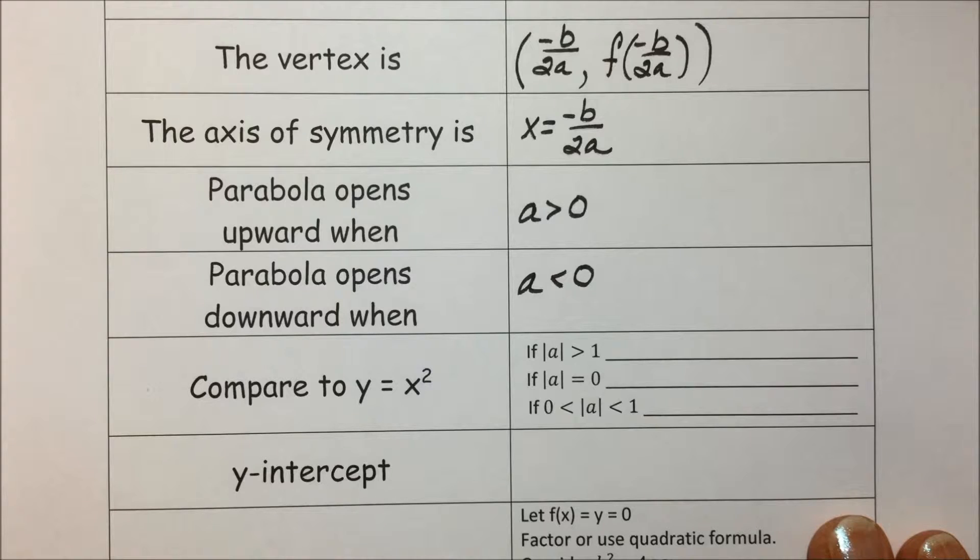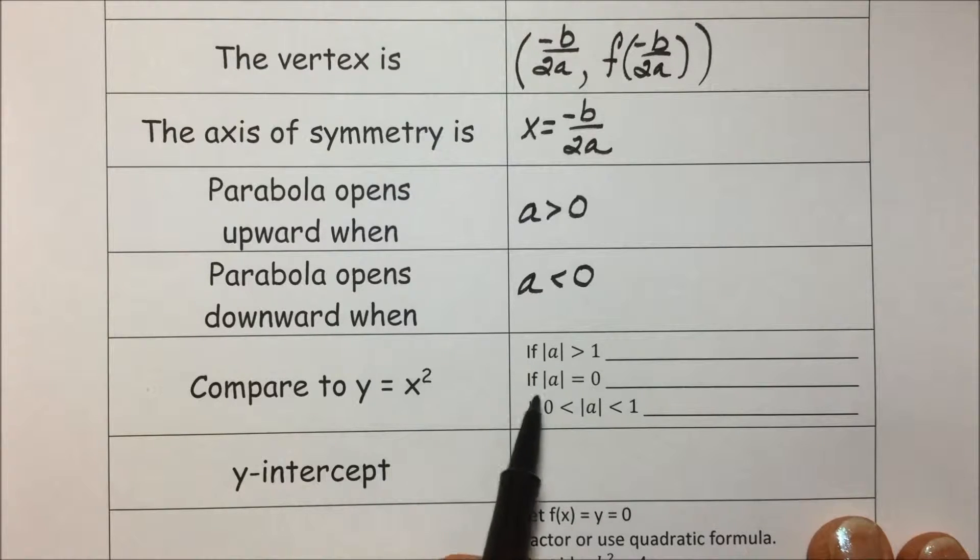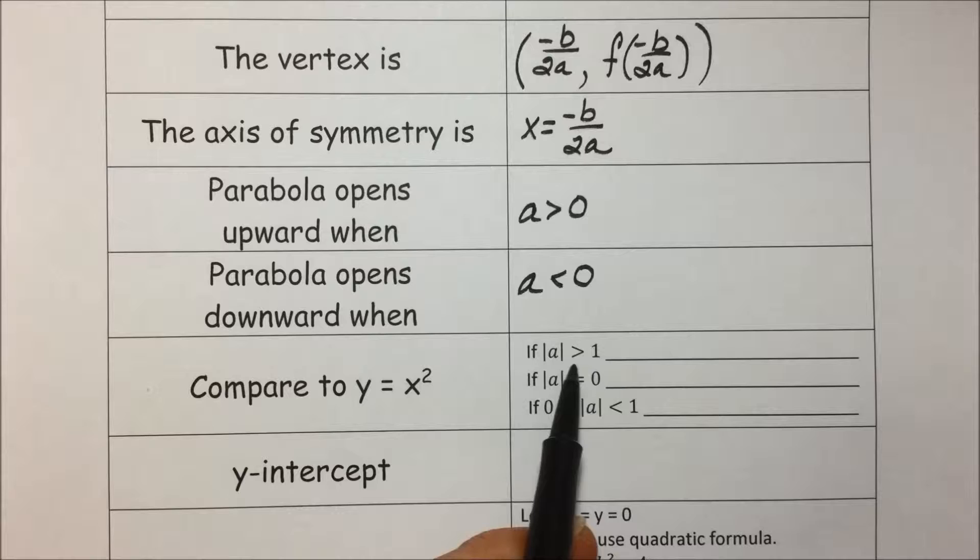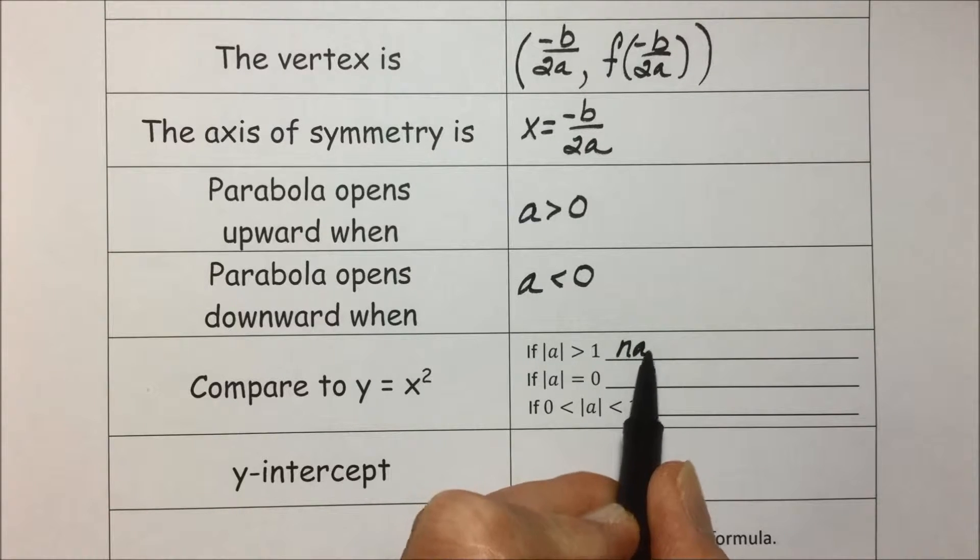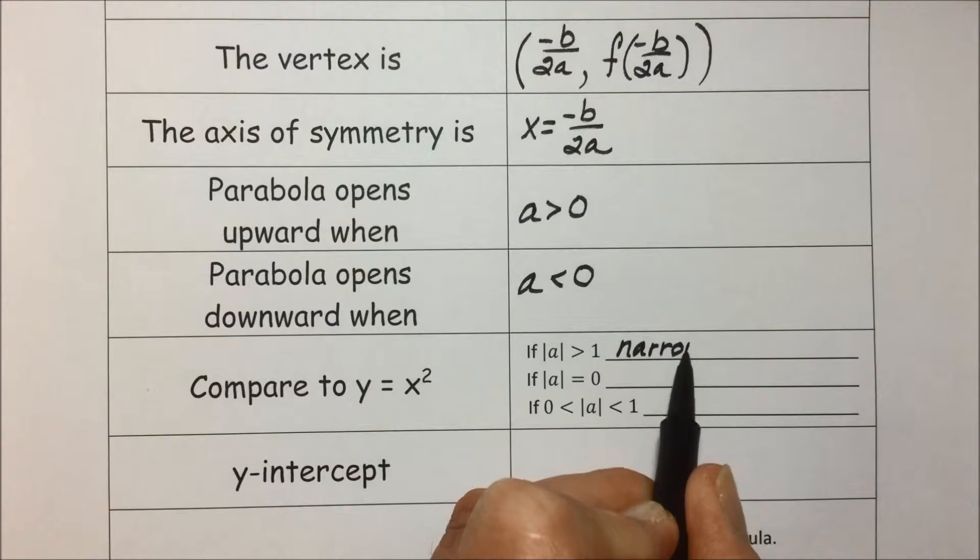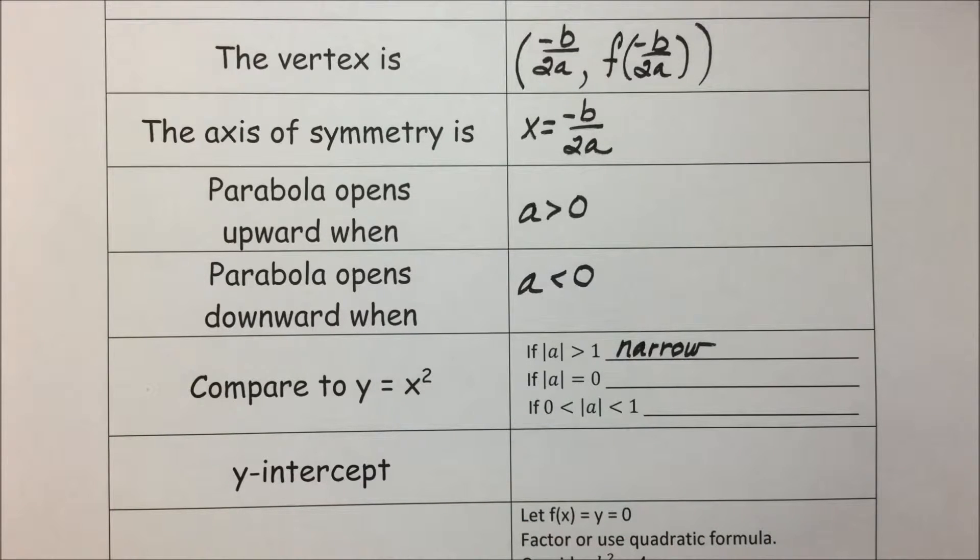Comparing our quadratic functions to the very basic quadratic form of this equation, if the absolute value of a is greater than 1, then our parabola will be narrow and head towards infinity much faster.